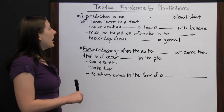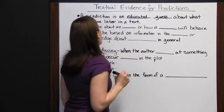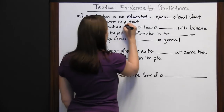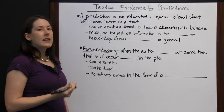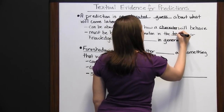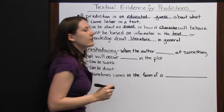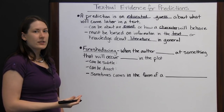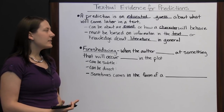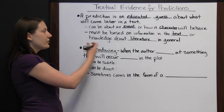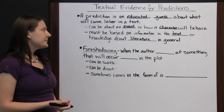A prediction is an educated guess about what will come later in a text. Your predictions can be about an event or about how a character will behave. Any prediction you make must be based on information in the text or based on knowledge about literature in general. For instance, if you've seen how a character has acted in a story so far, you can make a prediction about his future actions. With your knowledge about literature, you know the basic layout of a mystery novel, so you might be able to predict how the story will end up. The more you read, the more your general knowledge about literature will increase.